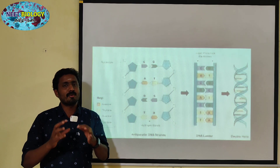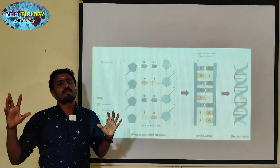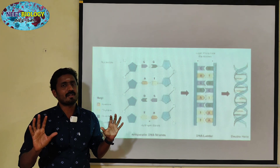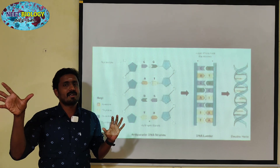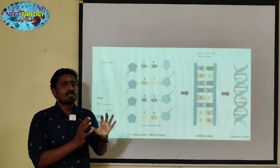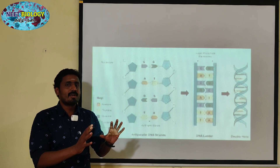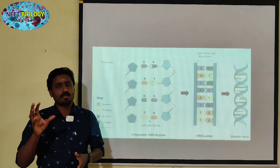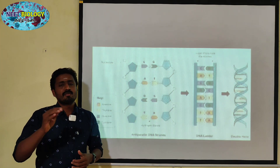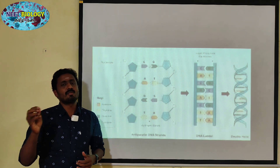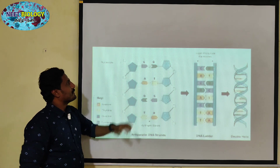Amino acids are the basic units of proteins. One protein is made up of amino acids. There are 20 basic amino acids. These 20 amino acids are coded by triplet codons — a 3-base sequence of nitrogen bases codes for each amino acid.